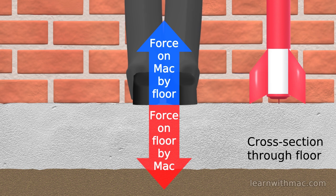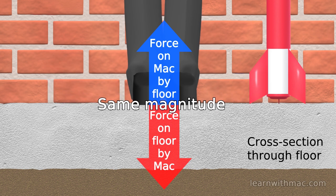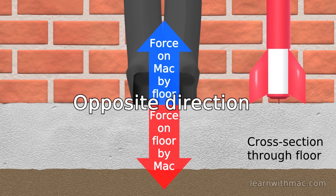In this case, we refer to the force I applied to the floor as the action force and the force applied to me from the floor as the reaction force. The action and reaction forces are precisely the same magnitude but in the opposite direction to each other.